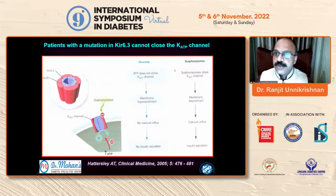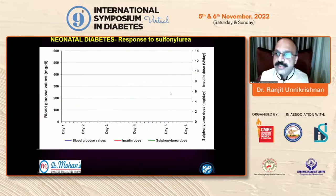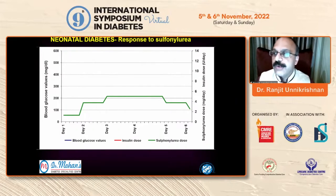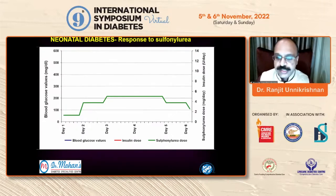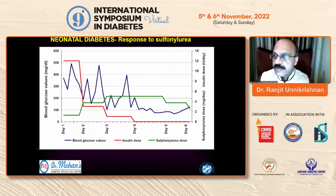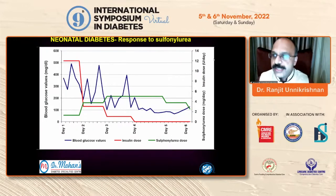We have many published cases demonstrating the response. This is a patient from Calcutta, a 72-day-old female baby with young-onset diabetes, taking 3.5 units of insulin per kilogram — a very high dose — with sugars at 300–400 mg/dL. Once we got the genetic report, we started her on sulfonylureas at a relatively high dose for her weight. Insulin was stopped by day 4, and glucose levels normalized. No hypoglycemia, no hyperglycemia, no insulin — just a relatively high dose of sulfonylureas.